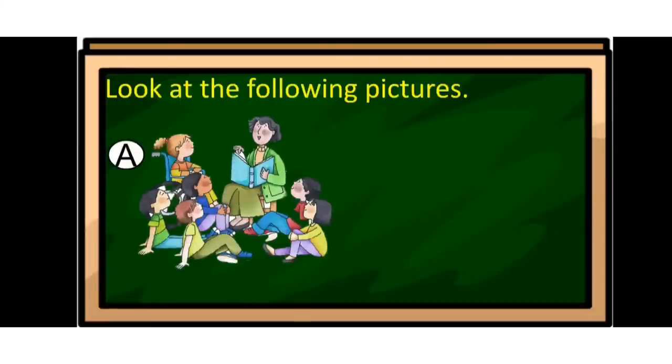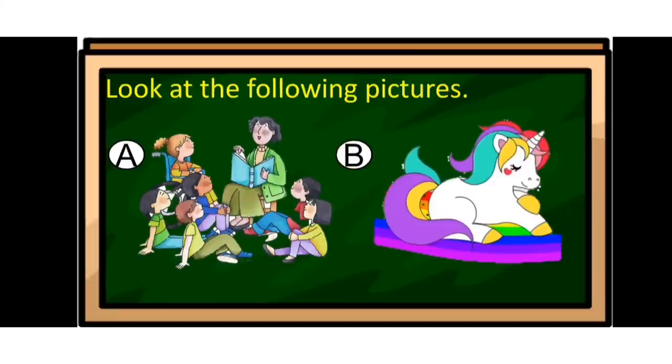Now I want you to look at the following pictures and identify if each is made-up or real. Picture A is a teacher with her pupils. Picture B is a unicorn. Picture C is a pet chai with a face.